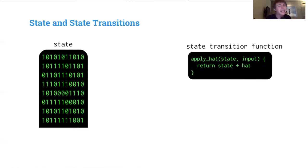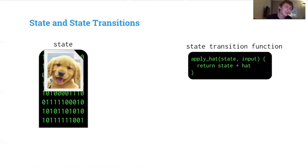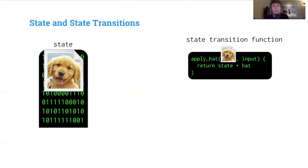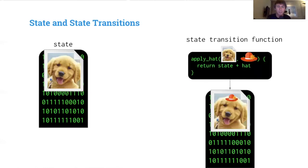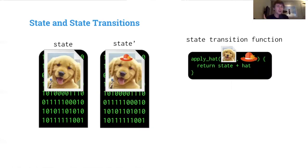For instance, we can have 'apply hat' as our state transition function. Our state represents a photo of our cute doge. We take that photo, drop it in as the state input to our apply hat function, then take a hat as the input, and out pops a cute doge wearing a hat. That's state number two — we've transitioned from one moment to the next.